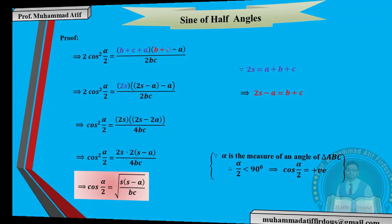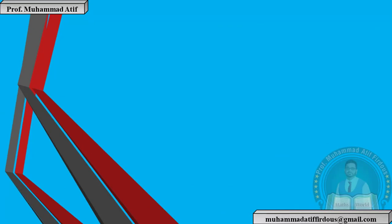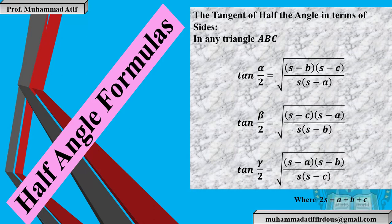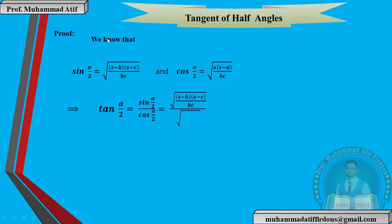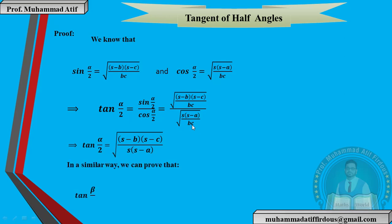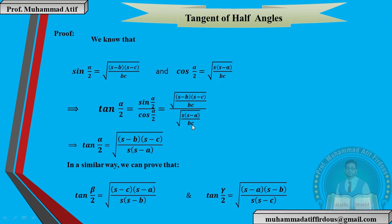Plus کیوں لکھا ہے — وہی reason: first quadrant میں ہے، less than 90° آ رہا ہے تو positive ہے۔ Half angle formulas دیکھنے میں tough لگتے ہیں لیکن یہ بہت easy proof ہے اگر symmetrical form میں step by step کریں۔ Tangent کا proof سب سے آسان ہے: tangent = sine/cosine۔ Sine اور cosine کے formulas پہلے ہی prove ہو چکے ہیں — بس دونوں کو divide کریں، bc cancel ہو جاتا ہے اور proof آ جاتا ہے۔ Papers میں یہ آنا شروع ہو چکے ہیں، ضرور practice کریں۔